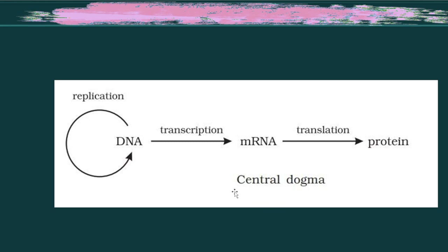The central dogma describes a sequence: DNA is replicated through replication, then transcription produces RNA from DNA, and translation produces protein from RNA. These are the basic terms you should know.